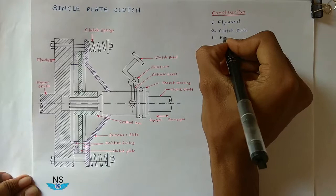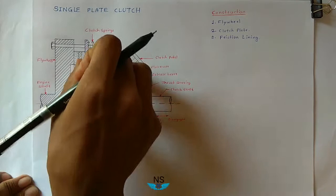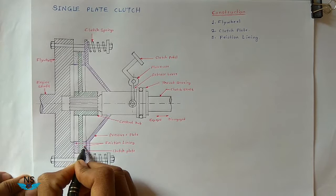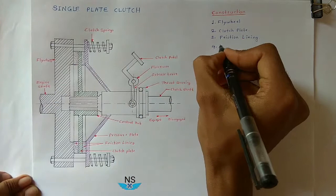The third part is friction lining. Friction surfaces are provided on both sides of the clutch plate. So these two friction linings or friction plates are provided on both sides of the clutch plate.